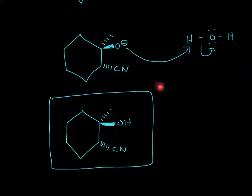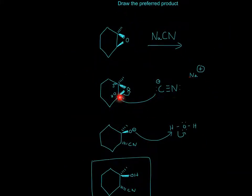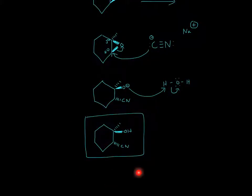The final product will look like this. All we did was attack it at the least substituted spot. We assumed a backside attack, so it will be a dash instead of a wedge. This will be your product. I hope that helped, and thanks for watching.